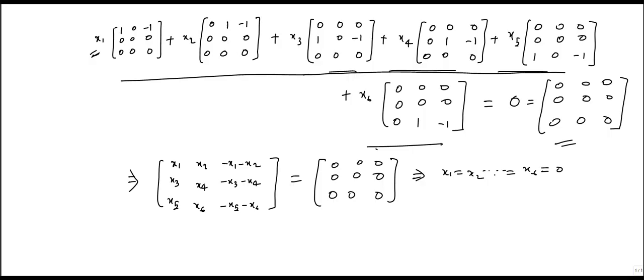That means these matrices are linearly independent. And as we discussed earlier, these matrices also generate the whole vector space, that is, the spanning set of these matrices is the whole vector space.